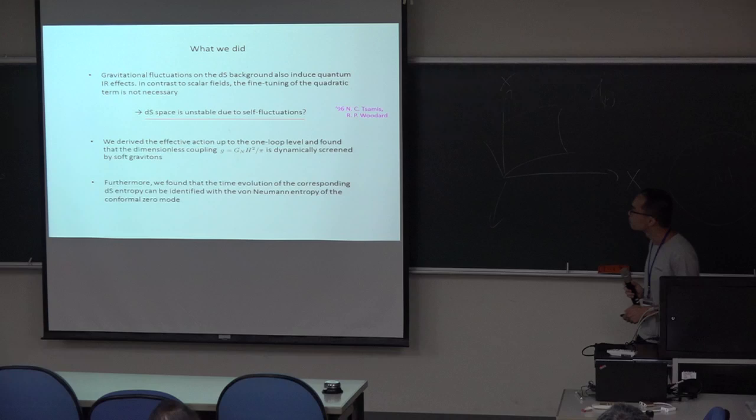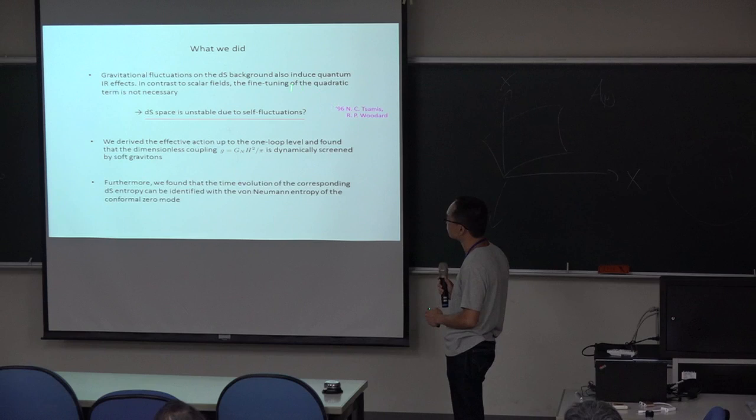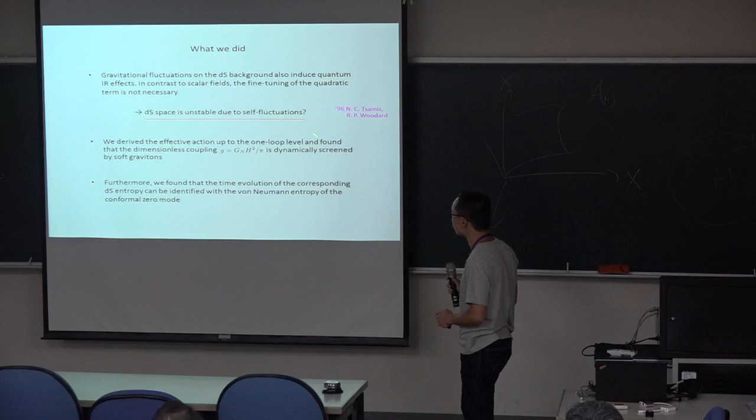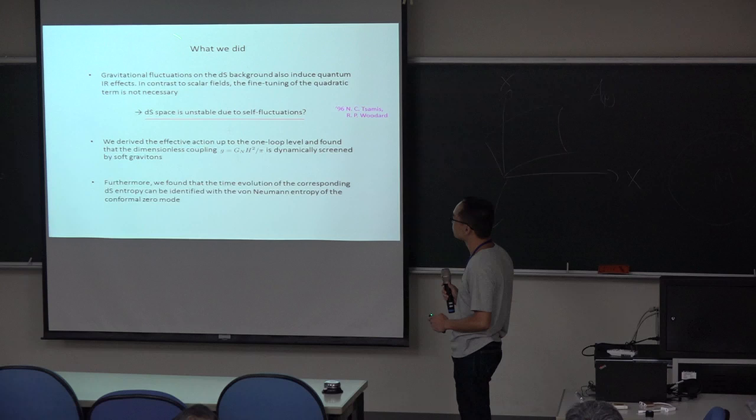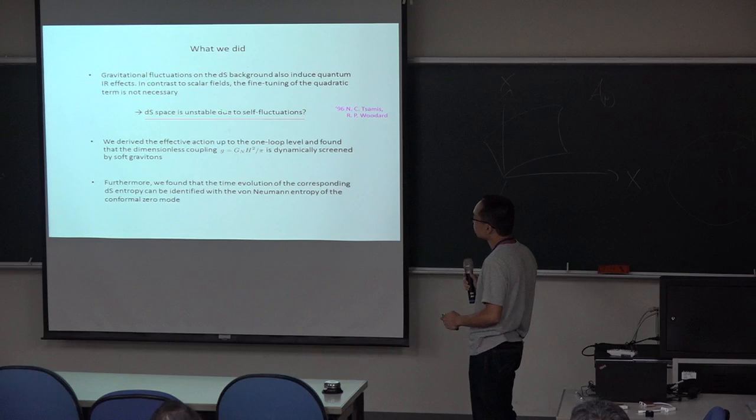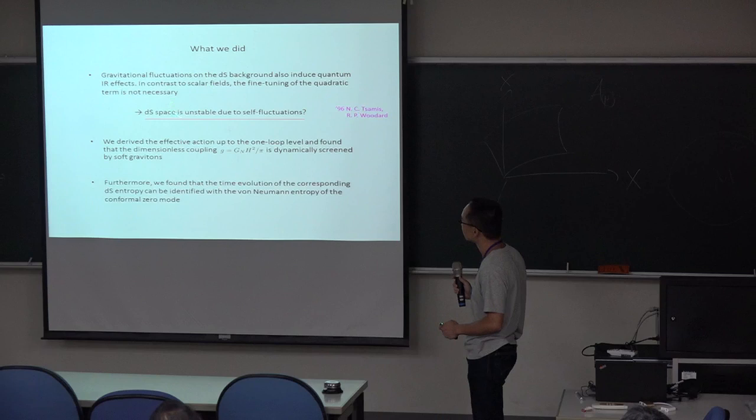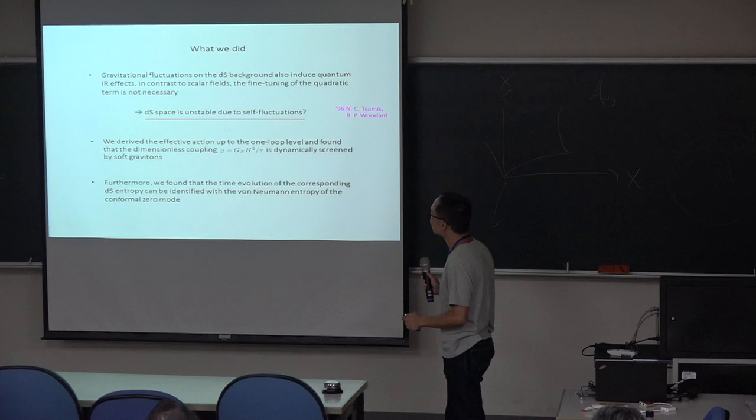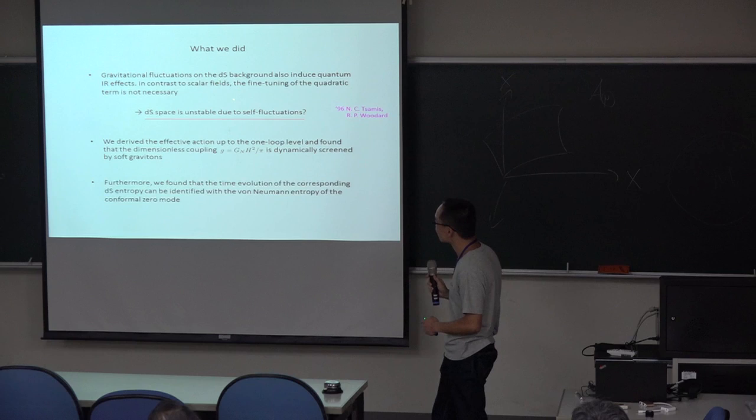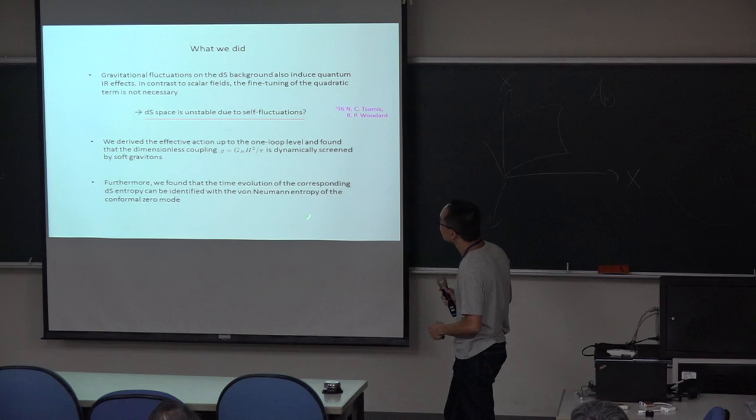The propagator is not sensitive to the increase of momentum interval. So in order to obtain time-dependent corrections, we need to fine-tune the mass. In that sense, the scalar field requires fine-tuning. The gravitational fluctuation, however, is different. So without fine-tuning, gravitational fluctuation can induce the time-dependent quantum corrections.